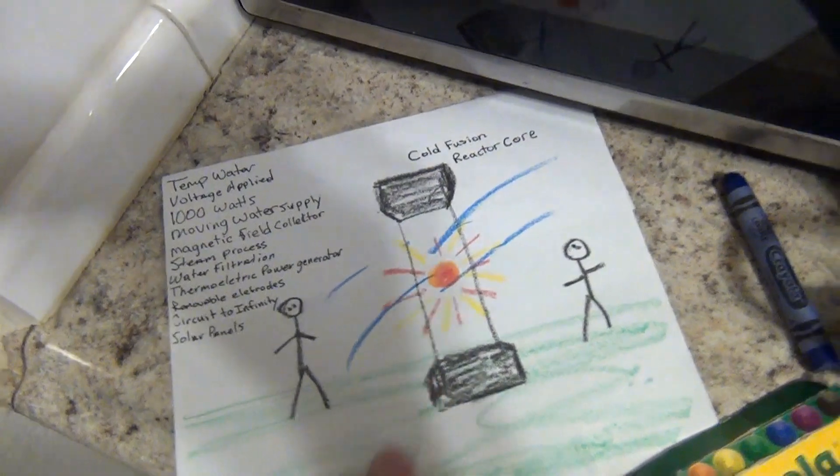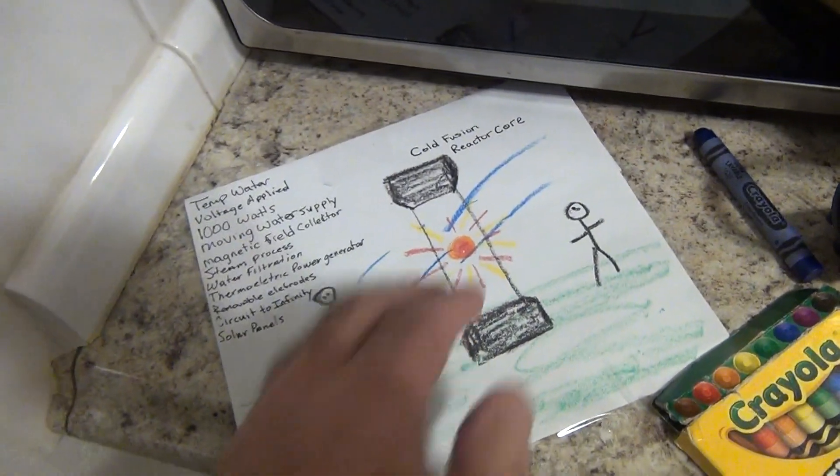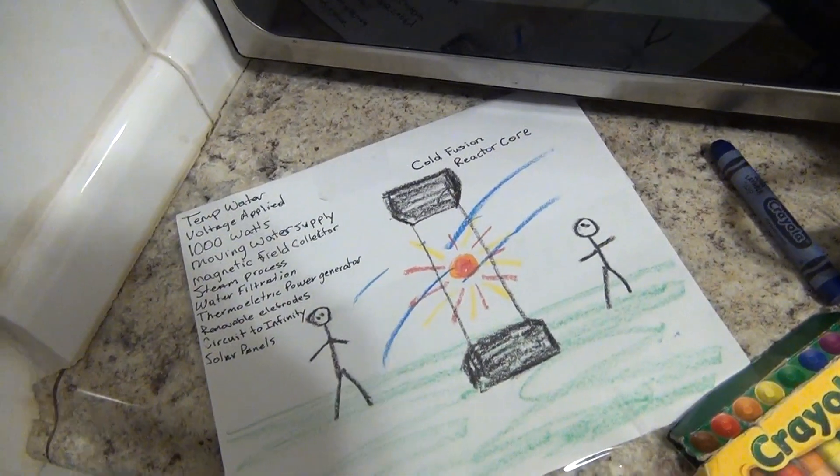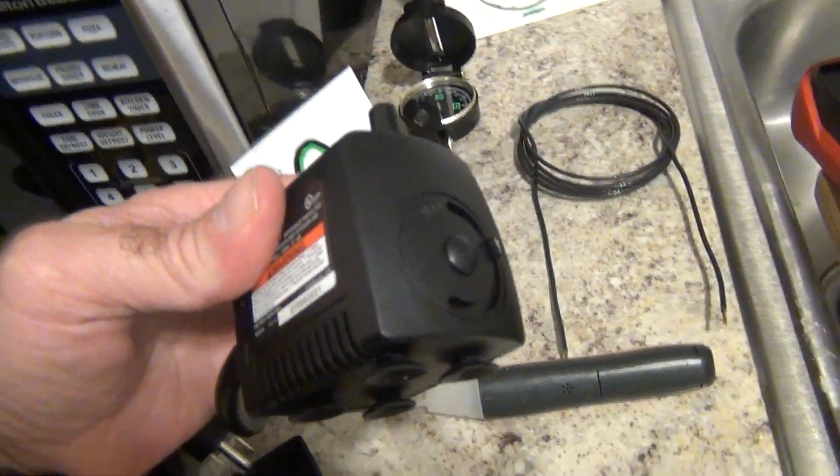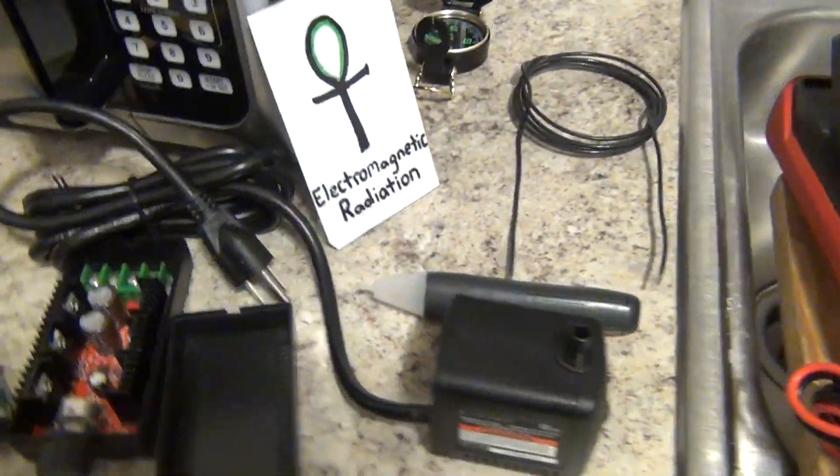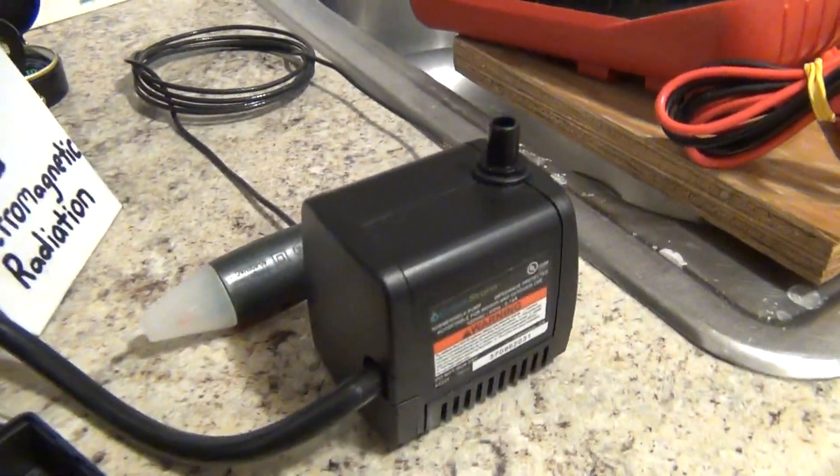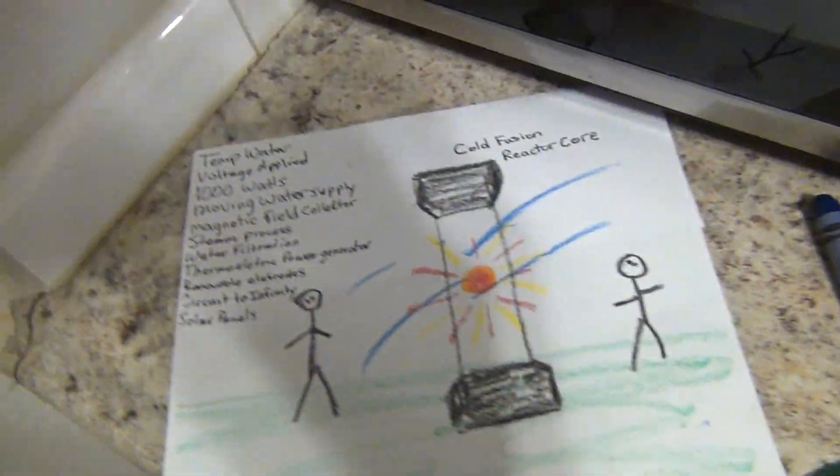What's important here is the temperature of the water, the voltage applied, how many watts you're going to make this thing run. You've got to have a moving water supply. I'm going to try to get the energy from the reactor using solar panels to power the motor to the power supply for the water. You've got to have the moving water and the temperature has to remain the same.